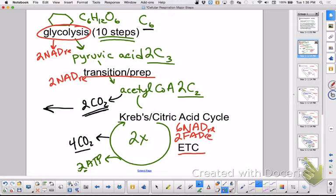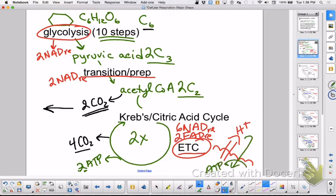All of these reduced NADs and FADs are bringing their electrons to the top of the ETC. As those electrons are passed along, then you're going to form a hydrogen ion gradient on one side. So when those hydrogen ions want to come back in, that gives us the power to make ATP.